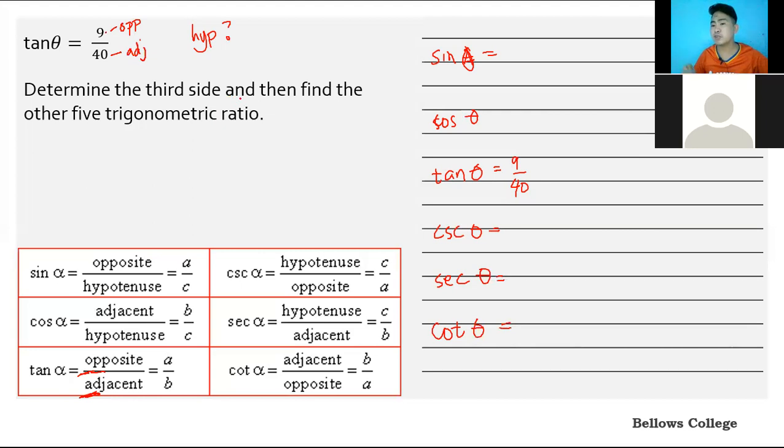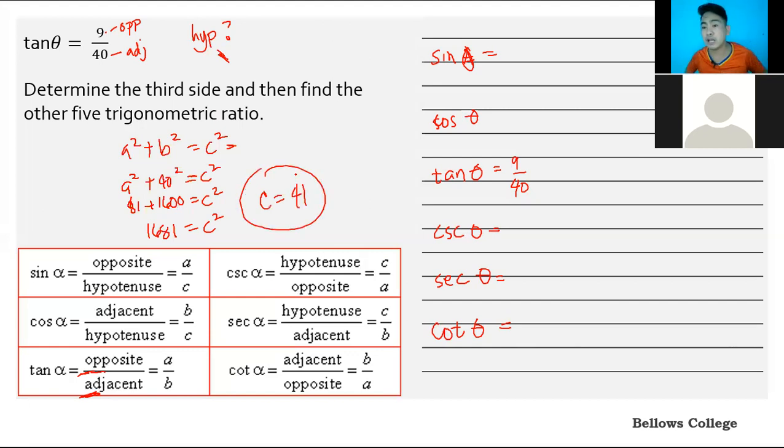We have to solve for the third side or the hypotenuse using the Pythagorean theorem. A squared plus B squared equals C squared. The hypotenuse is missing, so it's C. We have 9 squared plus 40 squared equals C squared. That's 81 plus 1,600 equals C squared, so 1,681 equals C squared. Using your calculator, type the radical sign and then 1,681. C equals 41. That's the value, so we have our hypotenuse, which is 41.